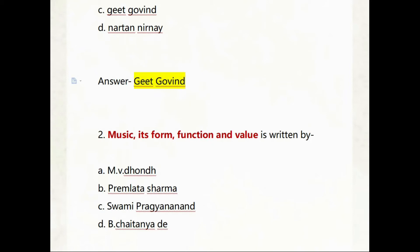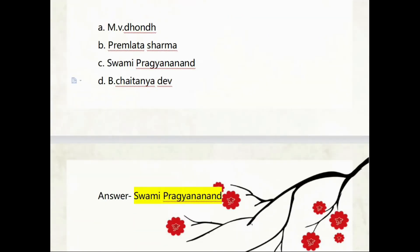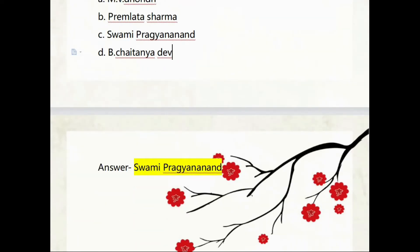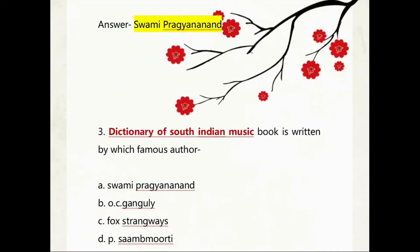The second question is: 'Music: Its Form, Function and Value' is written by whom? The options are M.V. Dhondh, Premlata Sharma, Swami Prajnanananda, and B. Chaitanya Dev. The answer is Swami Prajnanananda.